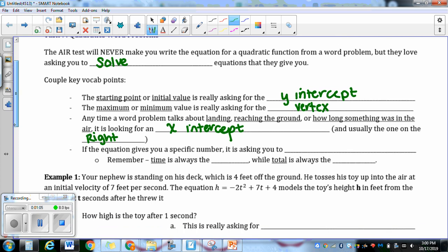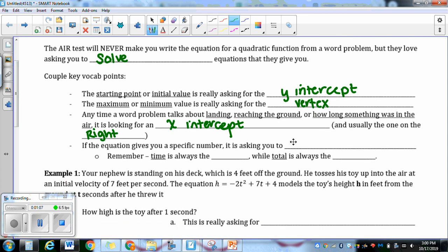And then if the equation gives you a specific number, it's asking you to either solve for x equals that number, or it's asking you to solve for y equals that number. So this is looking for the crossing points in Desmos, where you type in your equation, you type in x equals, or you type in y equals, and you see where they cross.